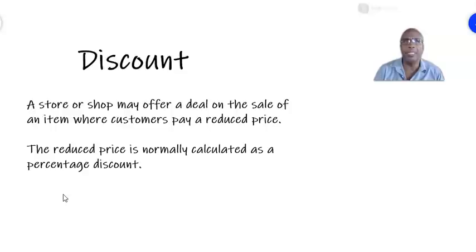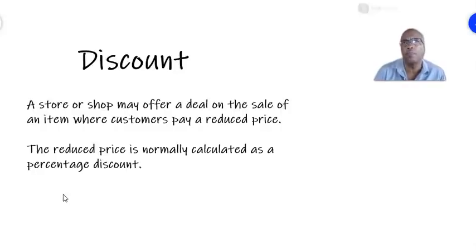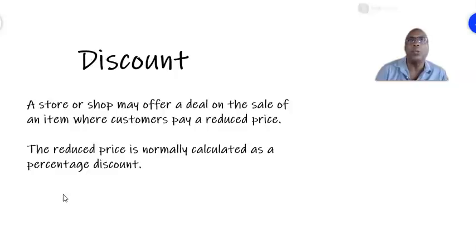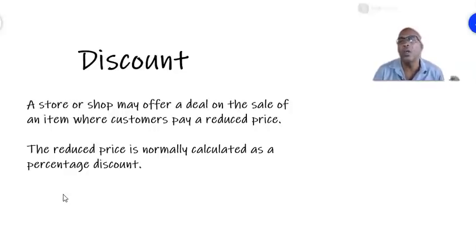Now let's move to examples on discounts. Discounts happen when stores or shops decide to reduce the cost of an item they are selling. For example, if you pay cash then you get a discount and pay a lower value. That reduced price is a discount, and normally we calculate a discount as a percentage — for instance, a five percent discount on the sale of an item.